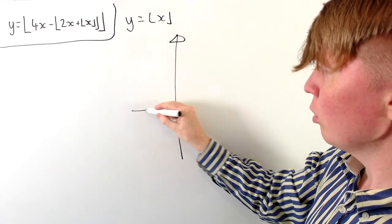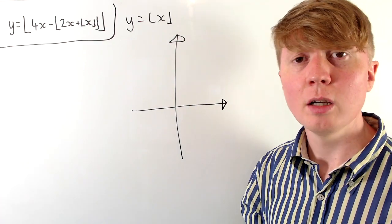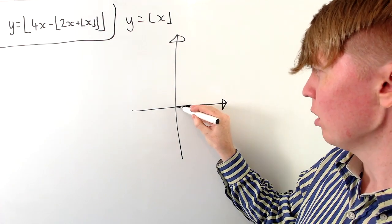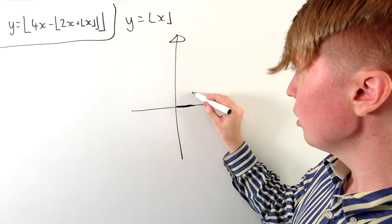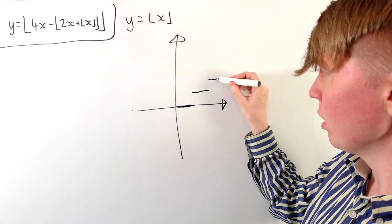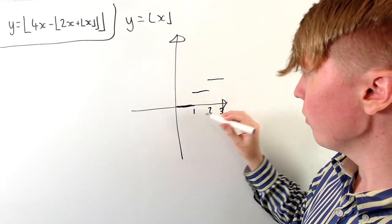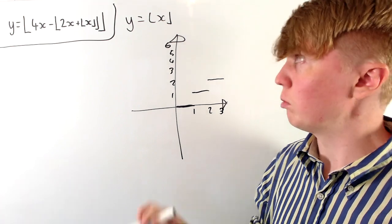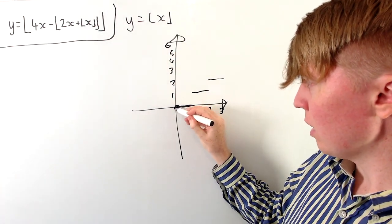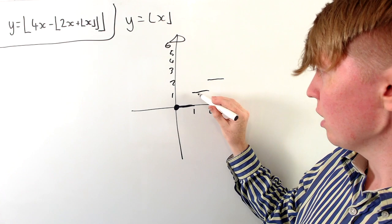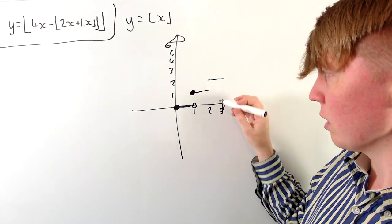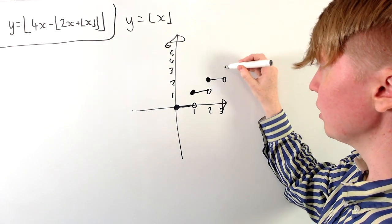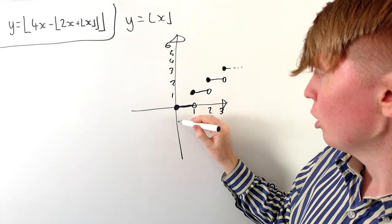To draw the graph of the floor function of x, we remember that the floor function is essentially the integer part of any positive number — it always rounds down. So for example, between 0 and 1, values like 0.1 or even 0.9 round down to 0. Once you reach 1, you get 1 as your output until you reach 2, and so on. More formally, it's the largest integer less than or equal to x. Using filled-in and non-filled-in circle notation, the graph looks like steps going upward.